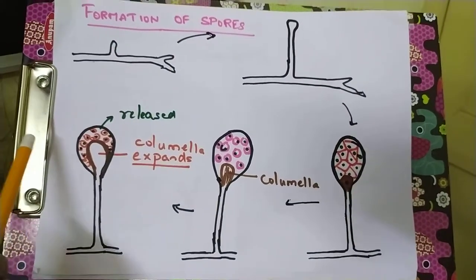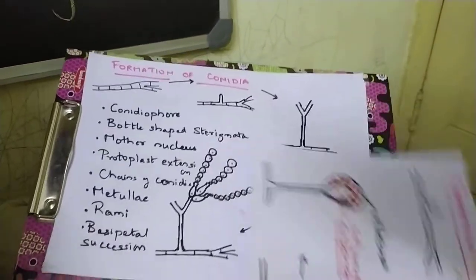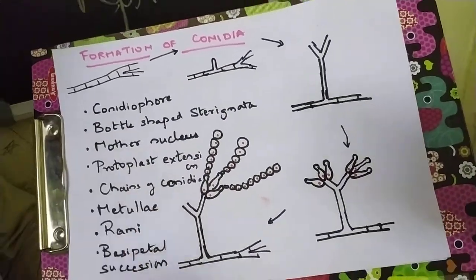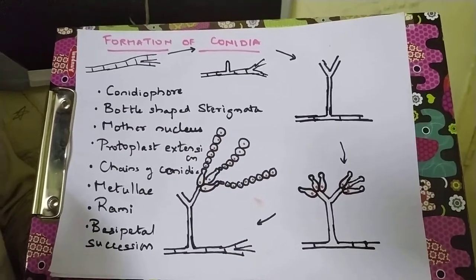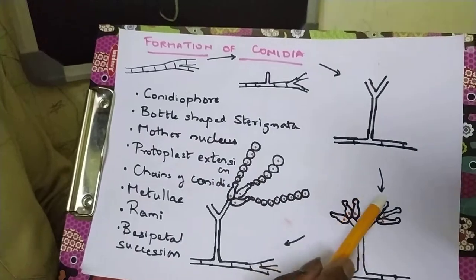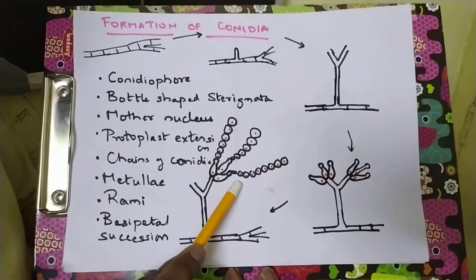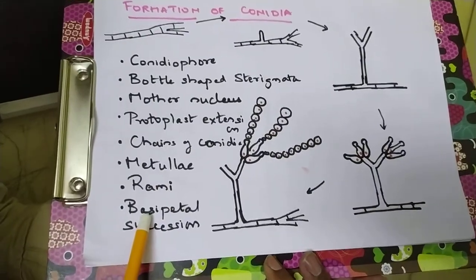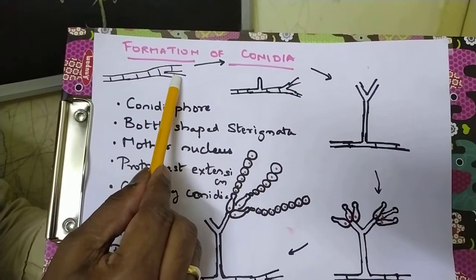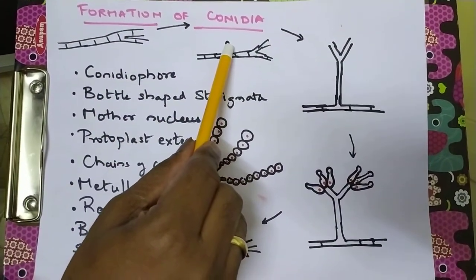The next topic is the formation of conidia. There is a difference between spores and conidia — please remember, spores were formed inside the sac-like structure. The example here is Penicillium. This fungus has septate mycelium, whereas the previous example had coenocytic mycelium. Here also there is aerial mycelium given off.